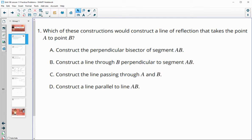Number one says, which of these constructions would construct a line of reflection that takes point A to point B? So if we had just two points, which of these would construct the line of reflection that would take A onto B?